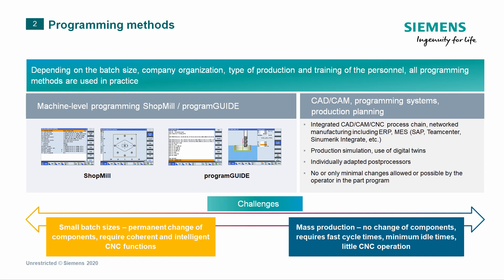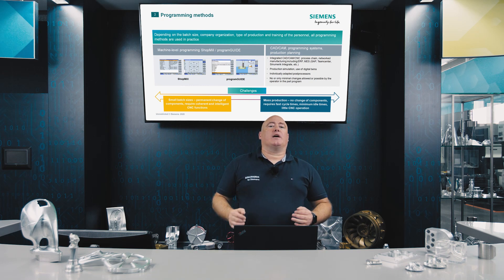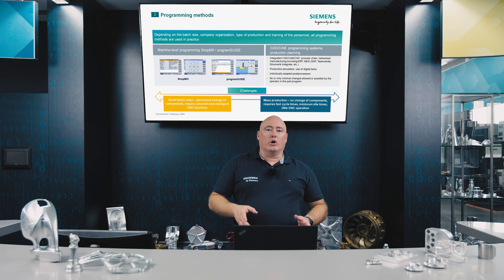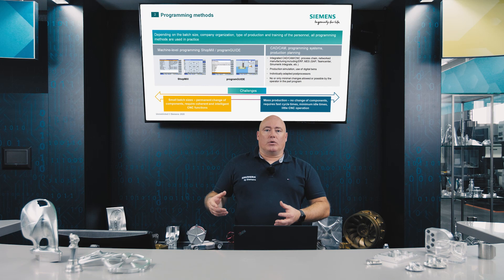With CINEMERIC, we distinguish between two basic ways of programming the machine. There is machine-level programming with ShopMill and Program Guide — the graphical user interface of CINEMERIC Operate — where a wizard guides you through filling out cycles in response to prompts. And then there is external programming, implemented with a CAD/CAM system. Programs are written externally and then transferred to the machine via a communication link: wireless, LAN, USB flash drive, or any other medium.